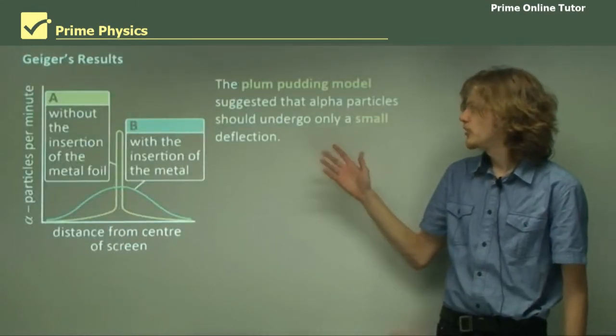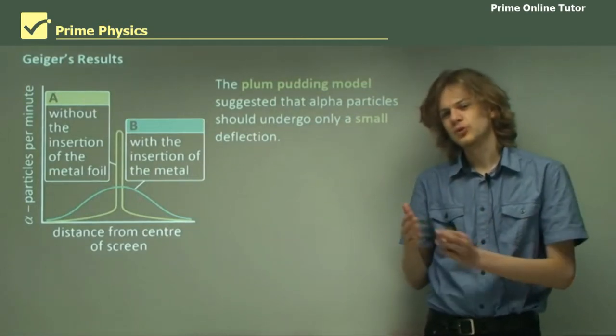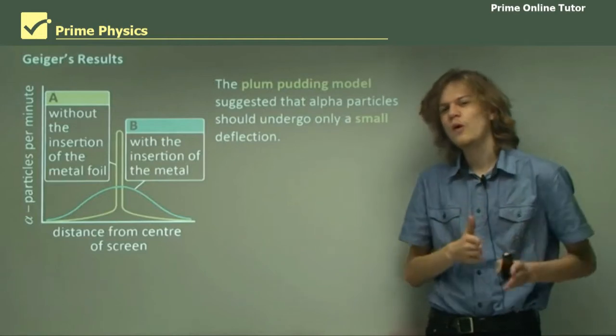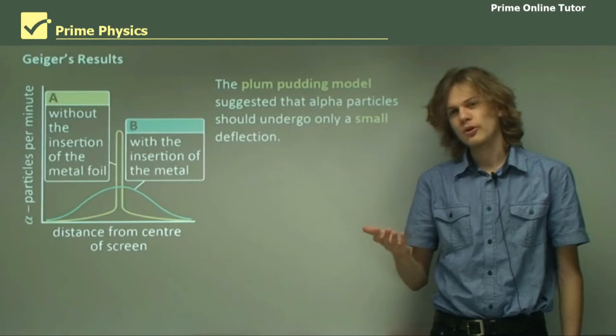The Plum Pudding model suggested that alpha particles should undergo a little bit of deflection, just sort of be deflected in one way a little bit, or one way in another bit. So, what did the experiment show?